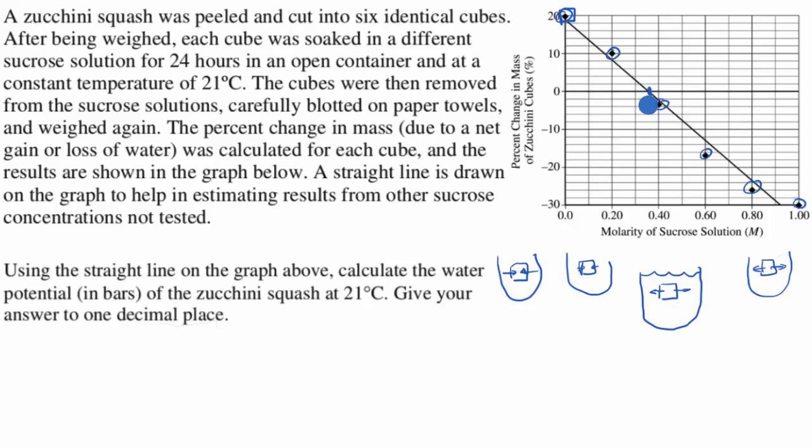into a sucrose solution that is, this looks about, let's see, this would be 0.3, so let's just call that 0.36 molar solution. Well, then it has the same water potential as that solution, because you have no net inflow or outflow of water. So the zucchini squash water potential is going to be the same as the water potential of a solution of sucrose that has 0.36 moles per liter. So we just have to figure out the water potential of that.